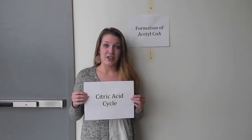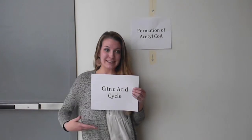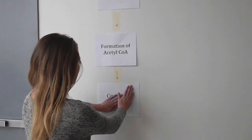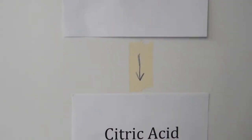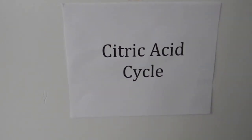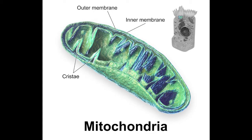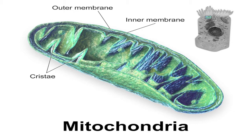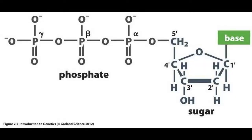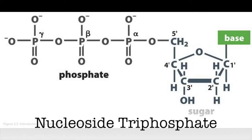The third stage is the citric acid cycle. The citric acid cycle takes place inside of the mitochondria. Mitochondria contain an outer membrane and an inner membrane with many folds. Energy production occurs within the matrix, the area surrounded by the inner membrane of the mitochondria. During the citric acid cycle, the acetyl groups of acetyl coenzyme A are oxidized to carbon dioxide. Some of the energy produced is stored in the bonds of a nucleoside triphosphate.